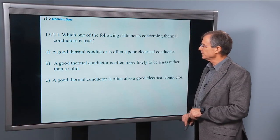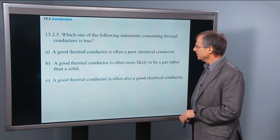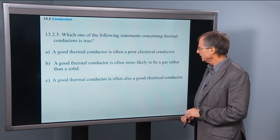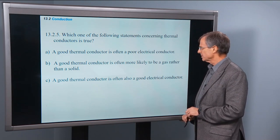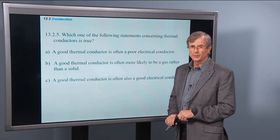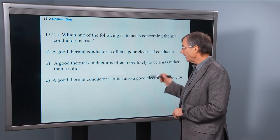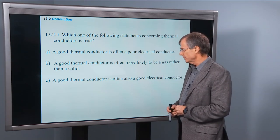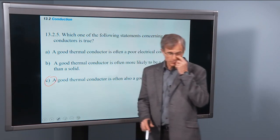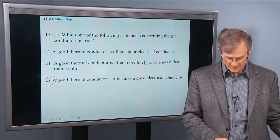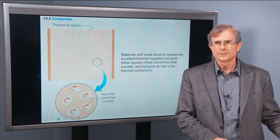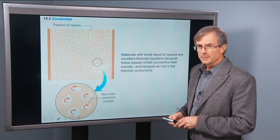Which of the following statements concerning thermal conductors is true? A good thermal conductor is often a poor electrical conductor — that's actually not true. A good thermal conductor is often more likely to be a gas than a solid — we saw aluminum was a great conductor and air was poor, so that's not true. A good thermal conductor is often also a good electrical conductor — this is true. Aluminum is a good electrical conductor and also a good thermal conductor.